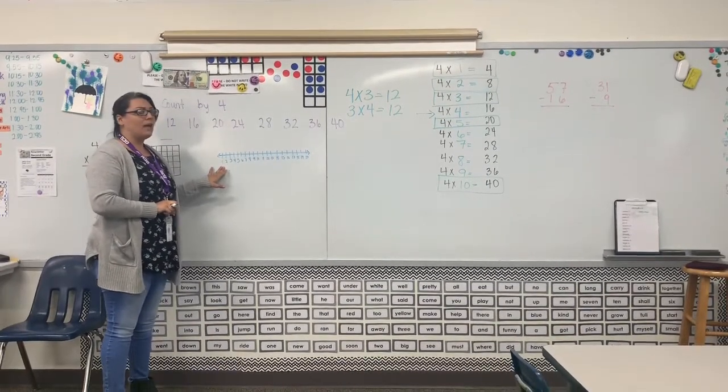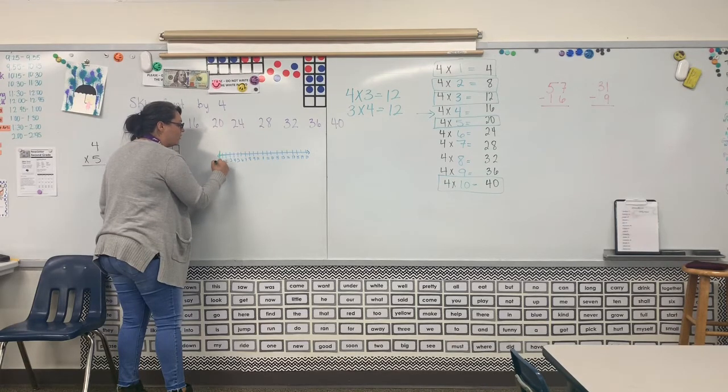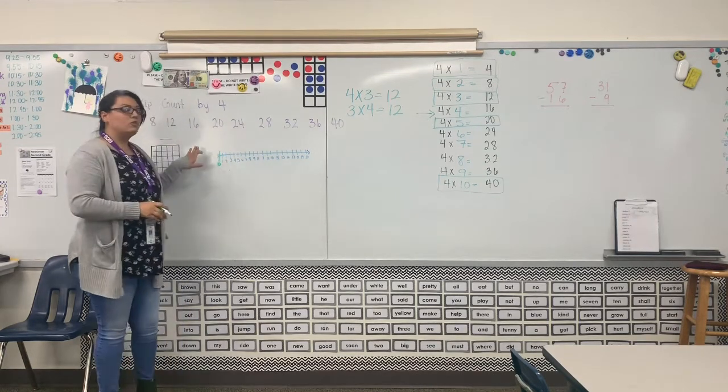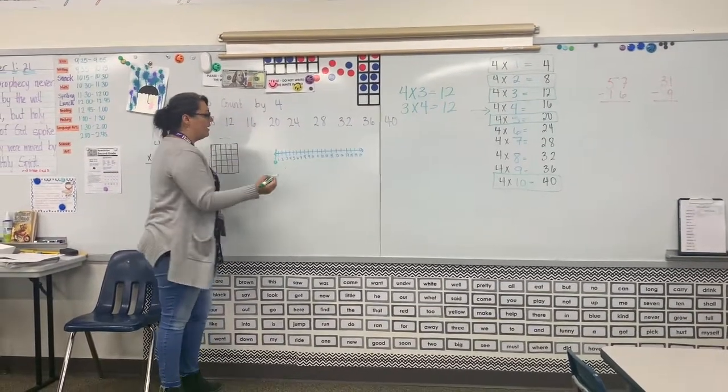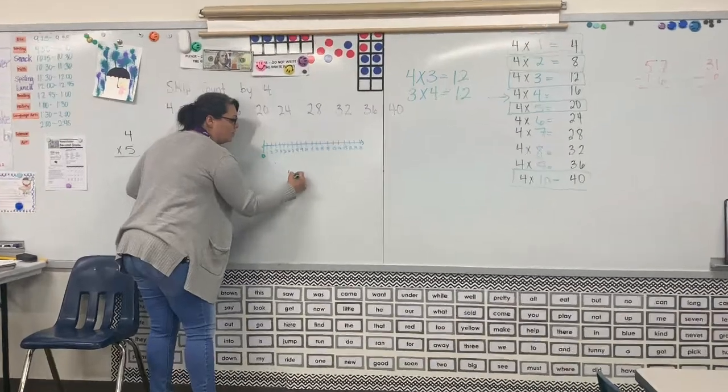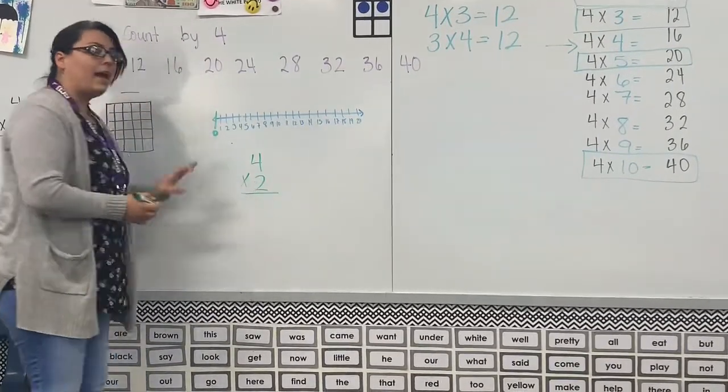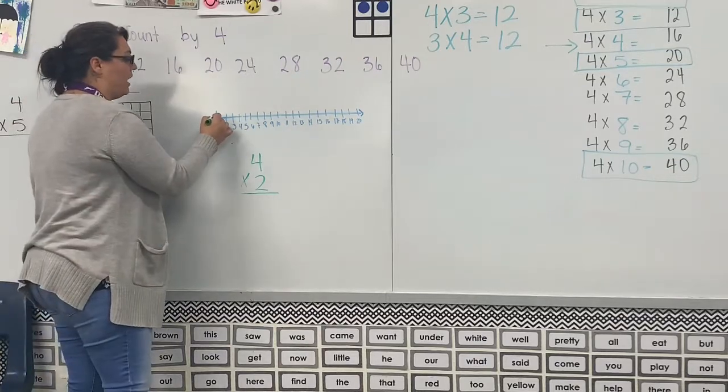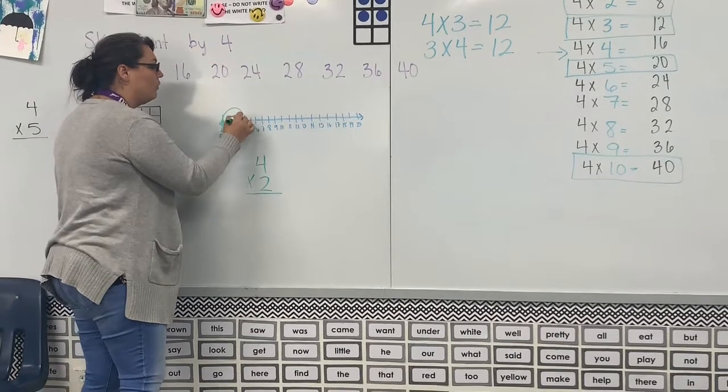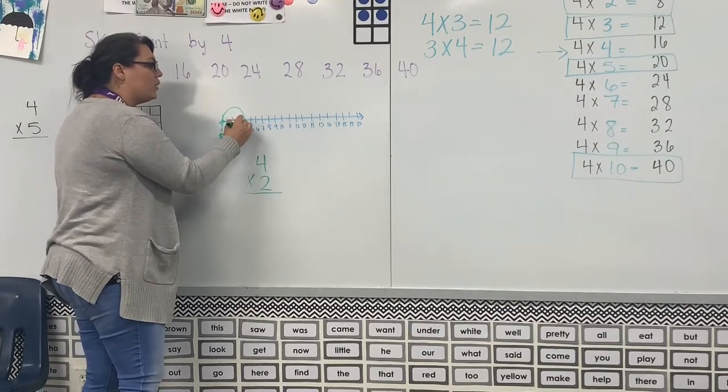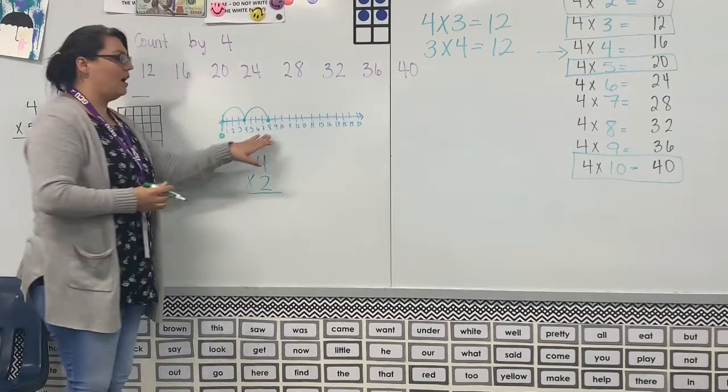And on our number line, when you are skip counting, I'm gonna add this in green so you see this. You start at zero. So if I give you a problem and I say what is 4 × 2, I am always going to start on the number line at zero. I'm gonna count four. One, two, three, four.